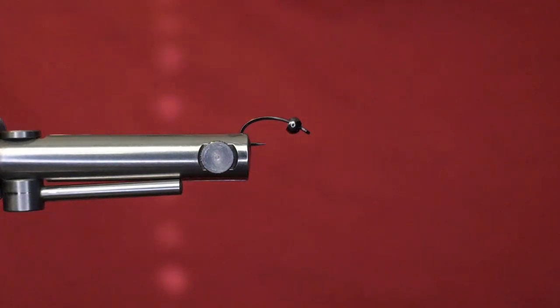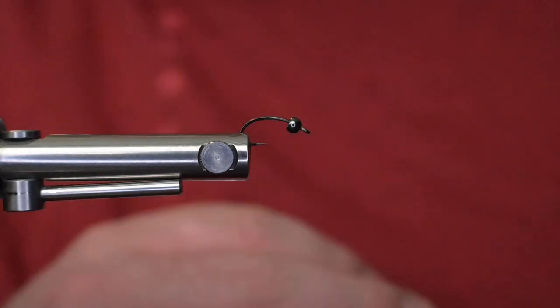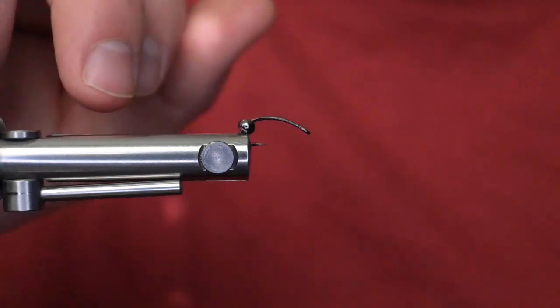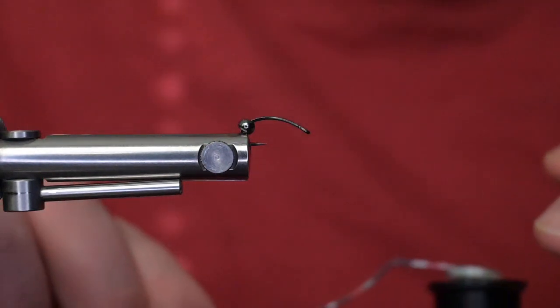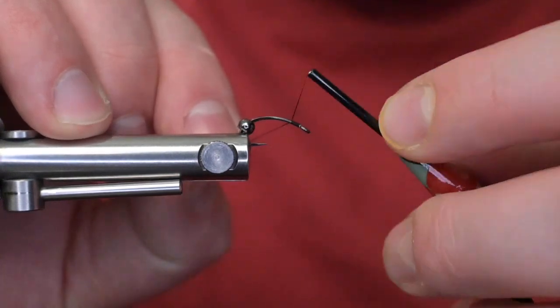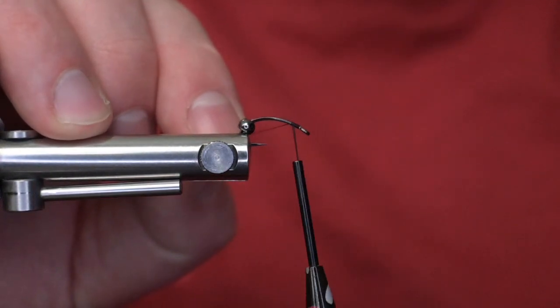They do take it down to an 18 and they even have a fine version of this hook. Bead-wise, I am using a black nickel 3.3 tungsten. To get this guy started, I'm going to slide my bead back and I'm using a Lagartun thread in a 95 denier. I'm just going to get my thread started in front of my bead.